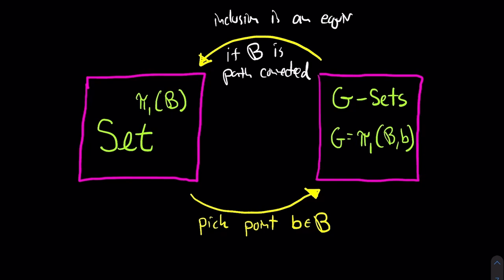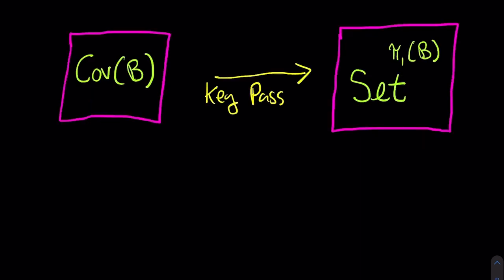The real key passage is from the category of covering spaces of B to the category of set-valued functors on the fundamental groupoid, because this is the passage from topology to algebra.